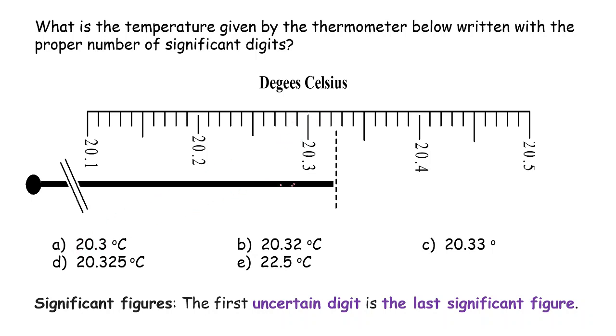Okay, 20.3. Let's find that out. 20.3, it is exactly this tick mark. If the temperature, let's say the mercury bar, stopped right here, then that's exactly 20.3. We know that is certain.